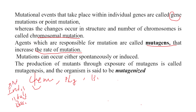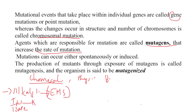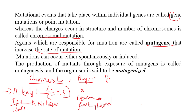Examples of chemical mutagens include ethyl-methyl sulfonate, ethyl-methyl nitrosourea, and ethyl nitrosourea — these are alkylating agents. Physical mutagens include X-rays, gamma rays, fast neutrons, and thermal neutrons; these are ionizing radiations. UV light is also a physical mutagen, but it is a non-ionizing radiation.